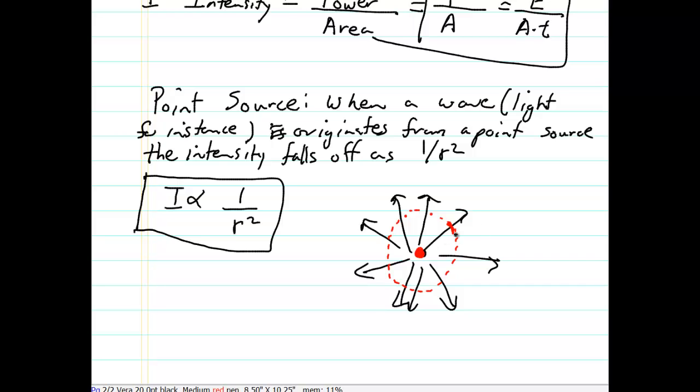...the area has increased by the surface area of the sphere. So I is equal to a constant, a constant power let's say, divided by 4 pi r squared. That's the surface area of the sphere.